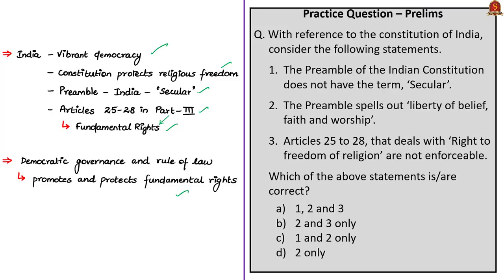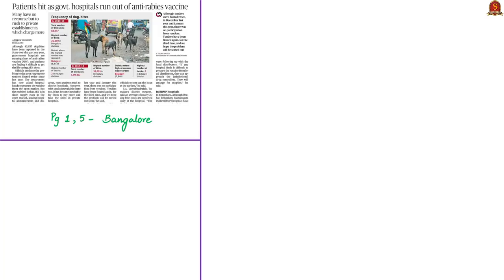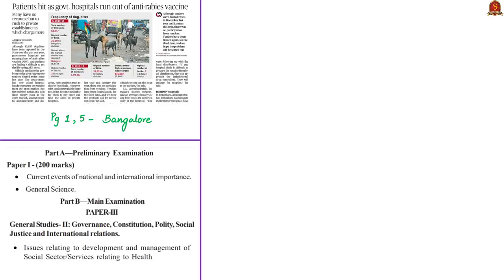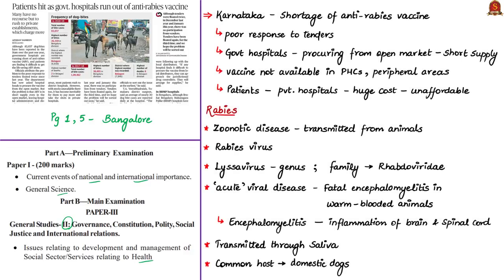The next news article is about rabies. The analysis will be relevant in prelims preparation under current events and general science, and in mains General Studies Paper 2 under issues relating to health. The article mentions that in Karnataka, government hospitals are running short of the anti-rabies vaccine (ARV), making it difficult for patients to get life-saving ARV shots. The reason reported is poor response to tenders for ARV floated last year — the tender was circulated twice with no participants.